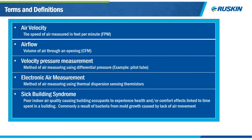We use a few common terms throughout this discussion. Air velocity is simply defined as the speed of air measured in feet per minute, and we use that to calculate airflow, which is the volume of air in cubic feet per minute through an opening. The two main types of airflow measuring systems are velocity pressure and electronic. Velocity pressure measures the difference in air pressure before and after a sensor to determine air velocity, and the most common example is a simple pitot tube.